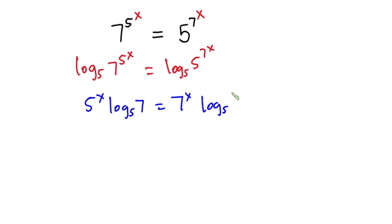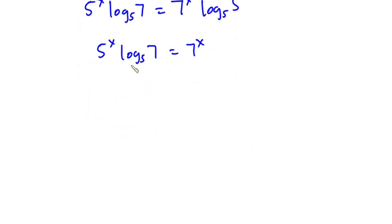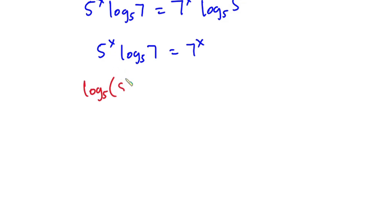So we have 7 to the power x times log base 5 of 5. Now log base 5 of 5 equals 1, so this simplifies to: 5 to the power x times log base 5 of 7 is equal to 7 to the power x. Now, looking at this equation, we still have exponents, so to remove them I'm going to introduce log base 5 on both sides once again. We get log base 5 of [5 to the power x times log base 5 of 7] is equal to log base 5 of 7 to the power x.